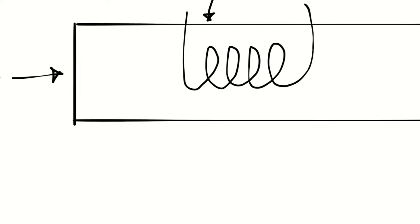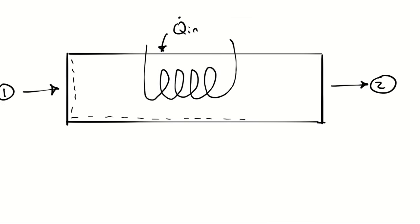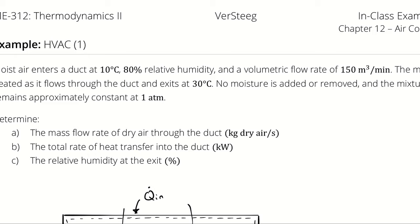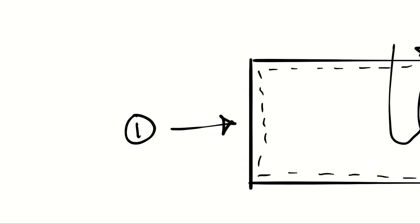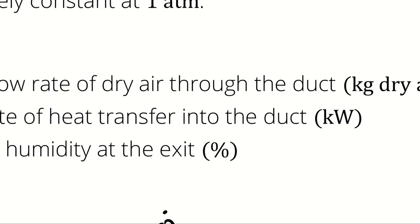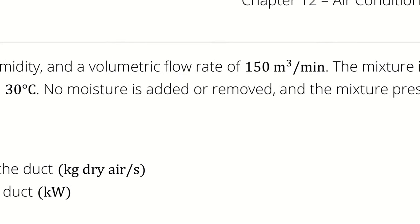I'm going to call the inlet state 1 and the outlet state 2. I know the temperature and relative humidity at the inlet: T1 is 10 degrees Celsius, and phi1 is 80%. I also know the volumetric flow rate. Quick question: is that the volumetric flow rate of the dry air, the atmospheric air, or the water vapor?